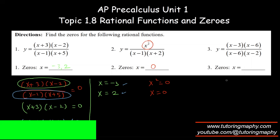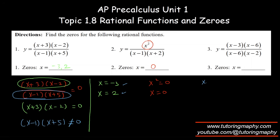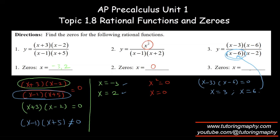In question three, setting the numerator to zero gives two solutions: x equals three and x equals six. However, x equals six is not allowed because six minus six makes the denominator zero. So six is rejected; only three is allowed, because at x equals three the denominator is definitely not zero.